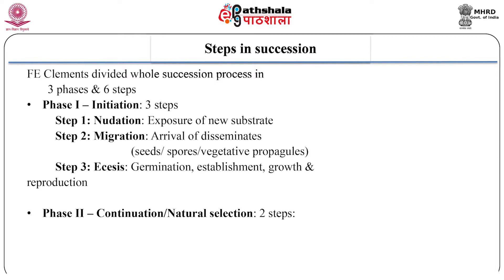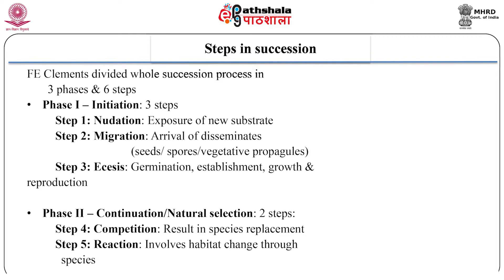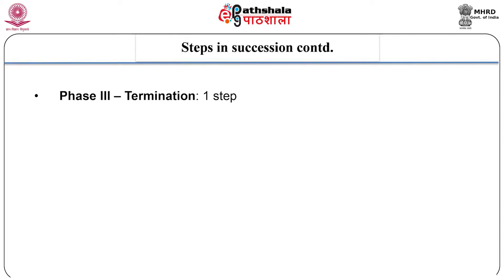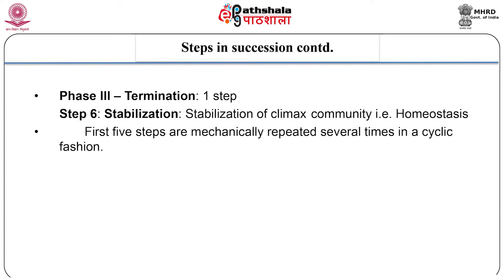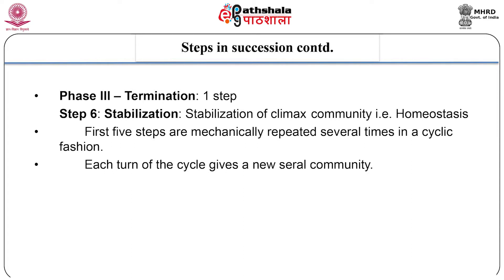Phase 2 involves the following 2 steps. Step 4 is competition — it may result in species replacement. Step 5 is reaction — it involves a habitat change through the species. Competition and reaction occur simultaneously. Phase 3 is termination, which involves only one step: step 6, stabilization — referring to the stabilization of the climax community, that is homeostasis. From migration to reaction, the 4 steps are mechanically repeated several times in a cyclic fashion, and each turn of the cycle gives a new serial community.